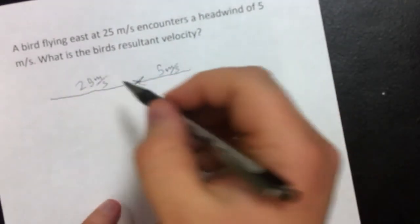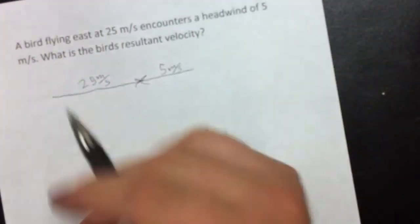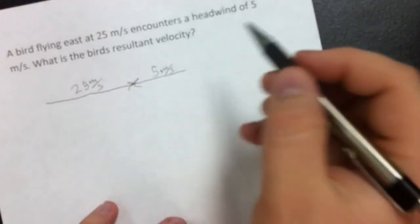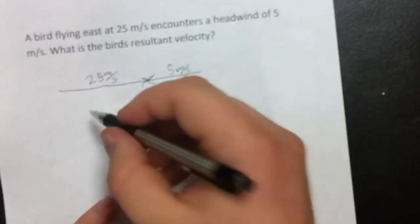So, the bird is traveling east. Remember, to the right is positive, to the left is negative. The bird is traveling east at 25 meters per second.